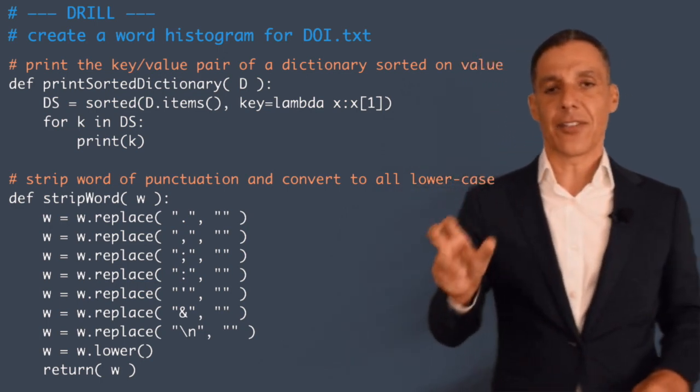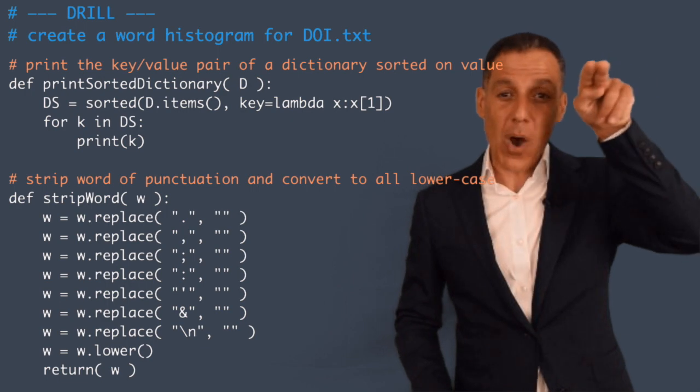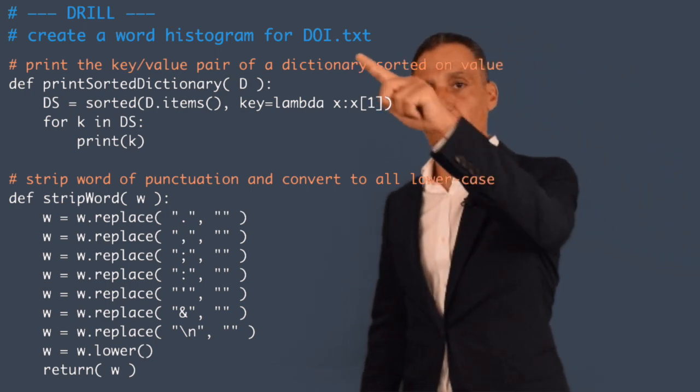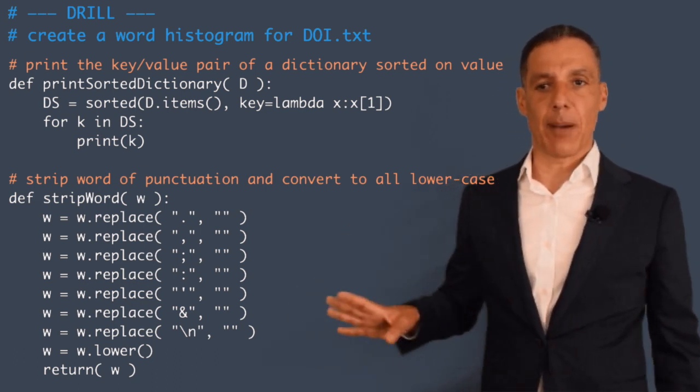So your key in the dictionary will be the word found in doi. The value will be how often that word was found here. Now a couple of things: I don't care about capital letters and I don't care about punctuation.